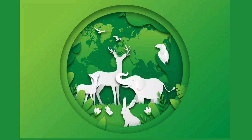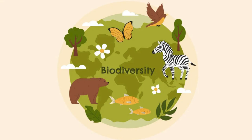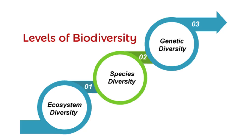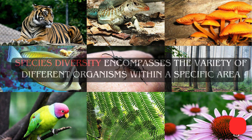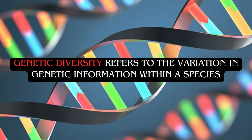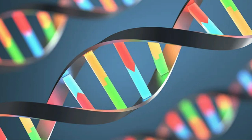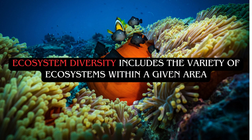Biodiversity changes over time as extinctions occur and new species evolve. Scientists often speak of three levels of diversity: species, genetic, and ecosystem diversity. Species diversity encompasses the variety of different organisms within a specific area. Genetic diversity refers to the variation in genetic information within each species. Ecosystem diversity includes the variety of ecosystems within a given area.